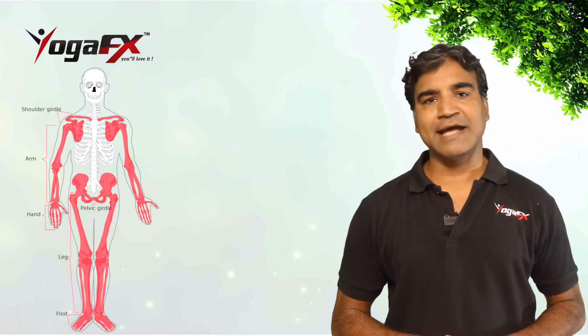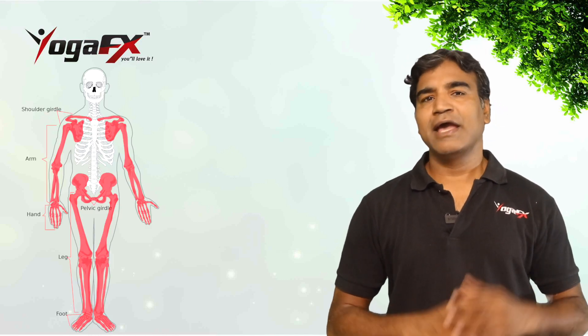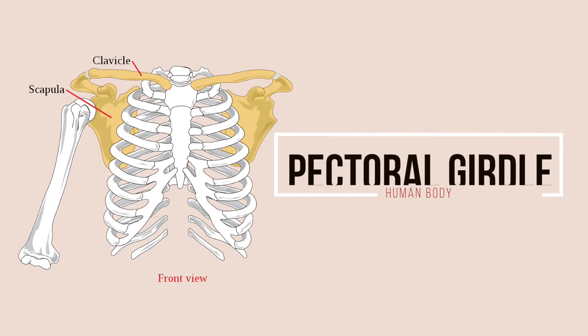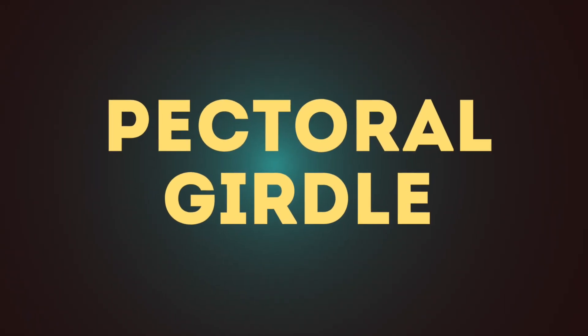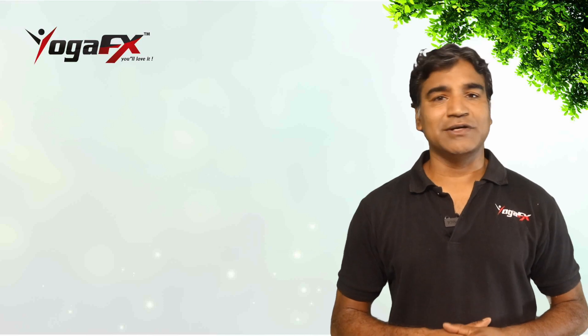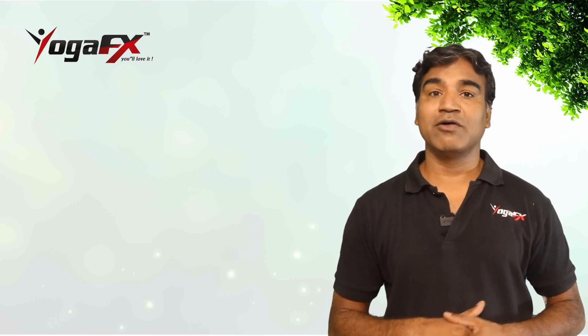Appendicular skeleton anatomy: there are a total of 126 bones in the appendicular skeleton. It consists of the bones that make up the arms and legs, as well as the bones that attach them to the axial skeleton. The pectoral girdle is where the arms attach to the axial skeleton. It is made up of the clavicle — that is your collarbone — and the scapula, or shoulder blade. There are two of each, one for each arm.